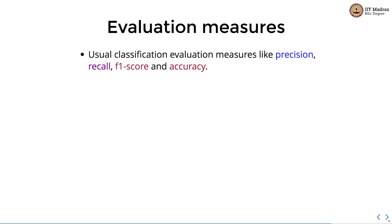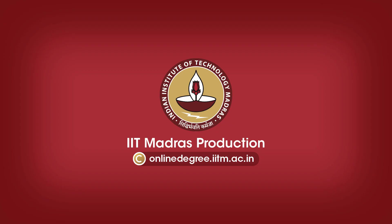For classification problems we use the usual evaluation methods like precision, recall, F1 score, and accuracy. In this video we studied how to set up the soft margin classifier, its objective function, its partial derivatives, and the update rule for gradient descent.